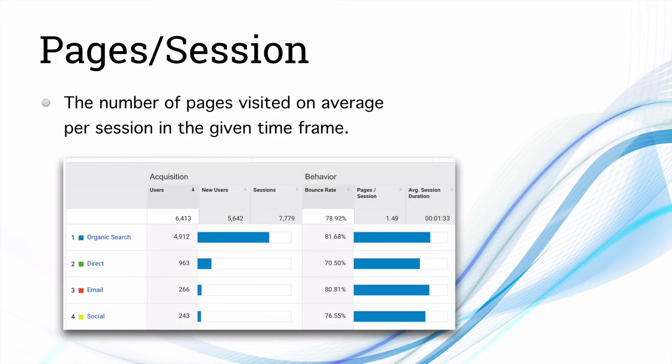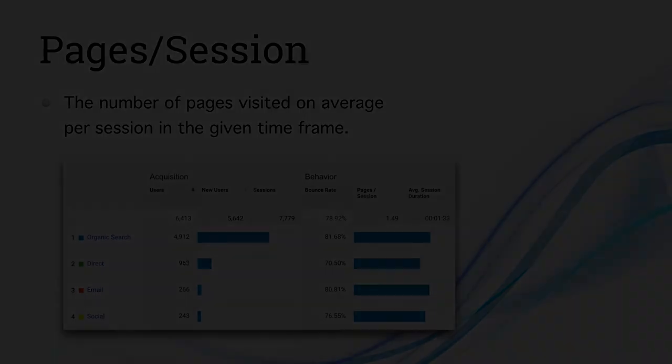The next one is pages per session — the average number of pages visited in a session within a given time frame. In this report you can see different pages per session for different traffic sources: people coming from organic search have a higher pages per session, while those coming directly have lower. Pages per session is also called page views per session — both are the same.